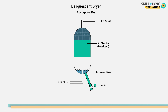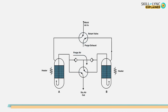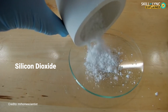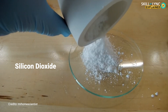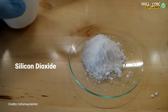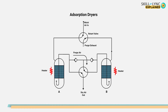These types of dryers are called absorption dryers. Since they use a chemical that is used up in the process, they need to be replaced at regular intervals. This problem of replacement is overcome by using adsorption dryers, which use a granular material such as silicon dioxide that collects moisture on its sharp edges. This moisture can be released back by simply heating the material.